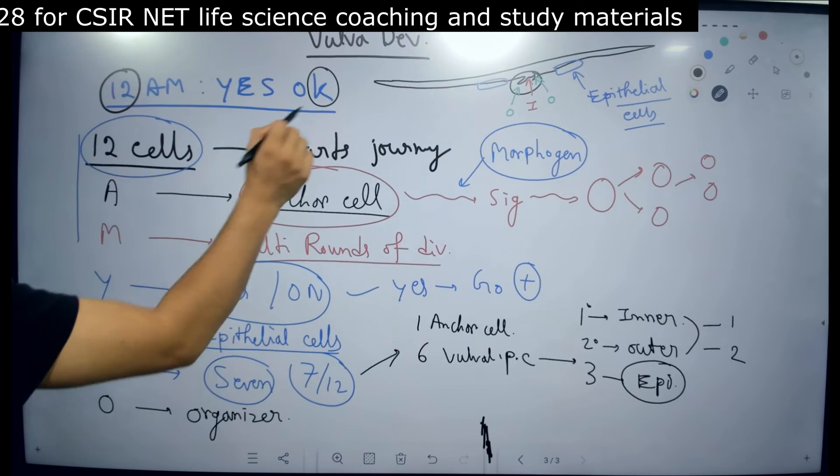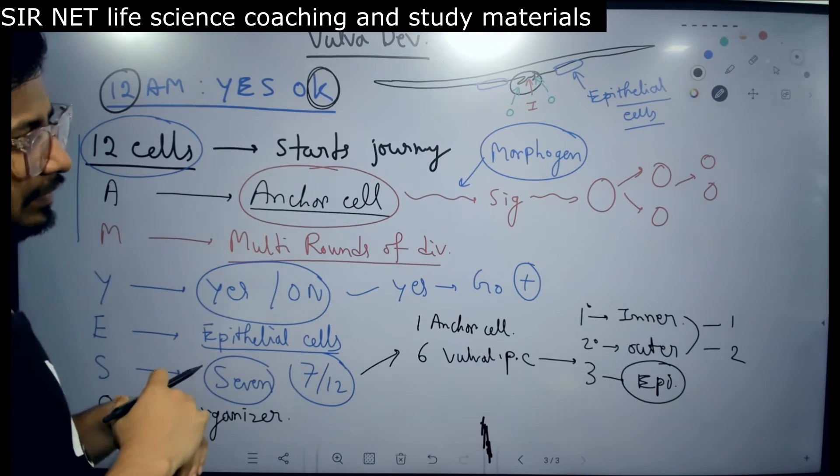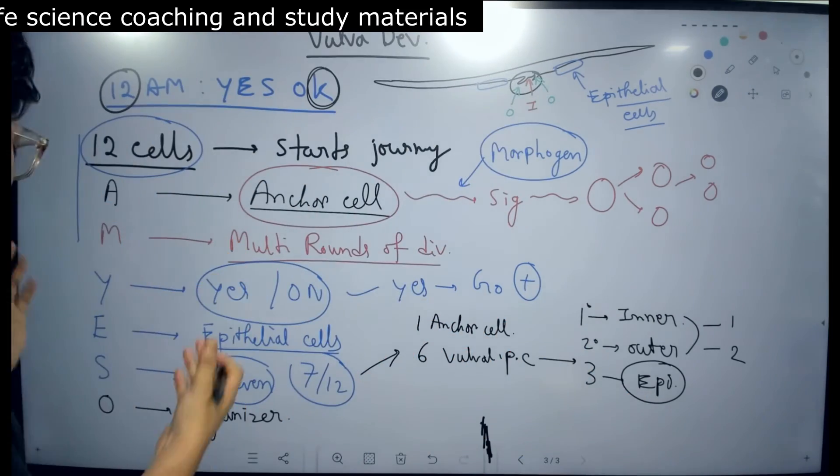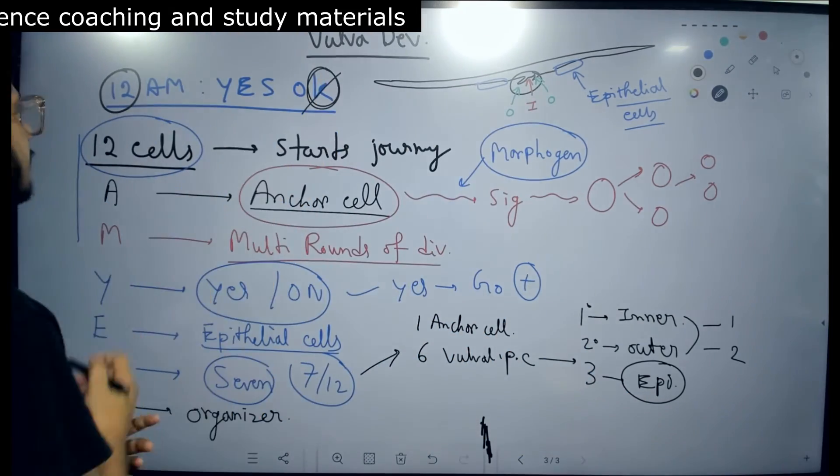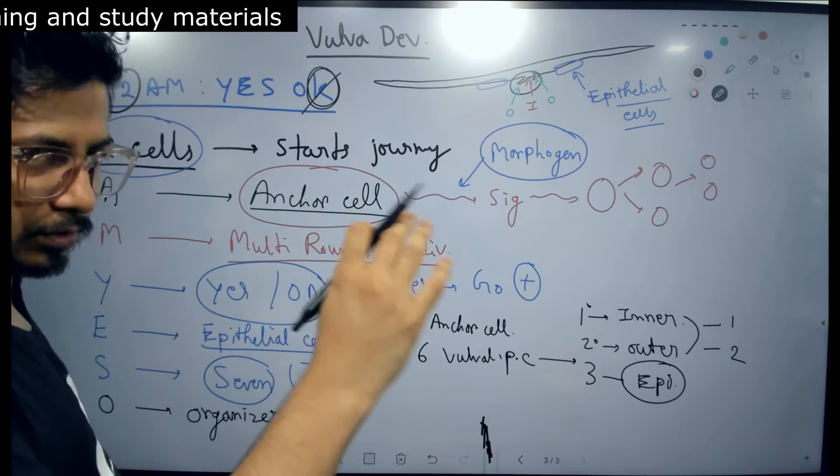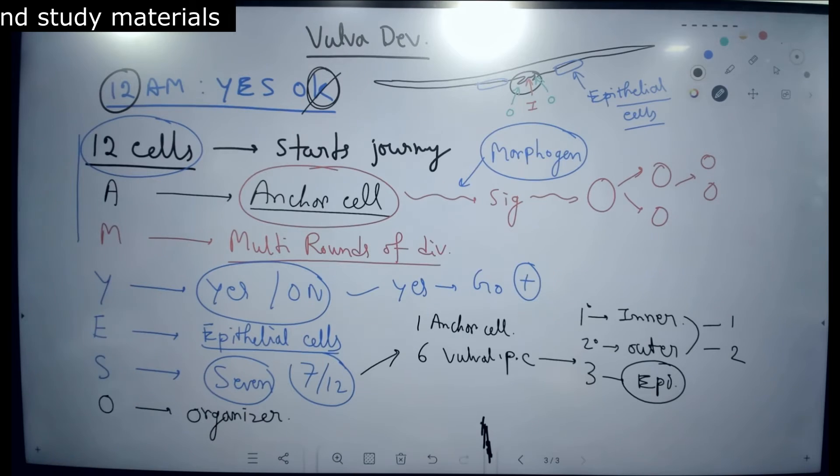And the last one is K. K stands for the key stages that we have talked about. Actually these are all the key stages that we talked about, so it is not that important. Just to maintain the sentence, 12am yes OK, I put K there, but these are the important ones.